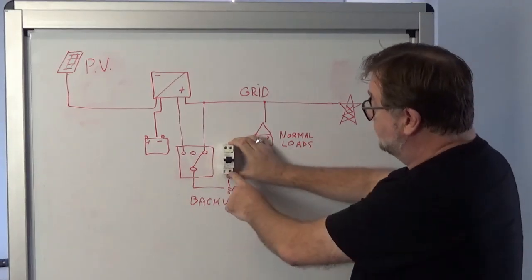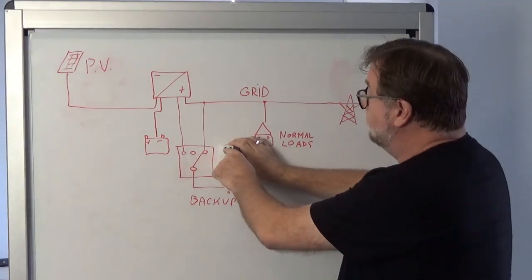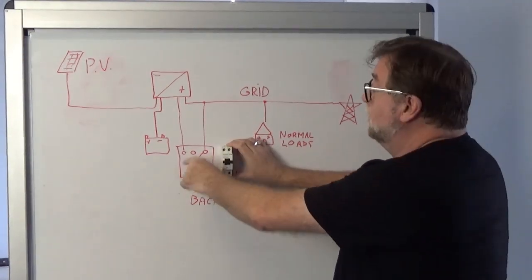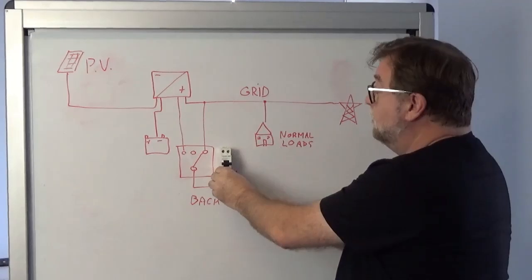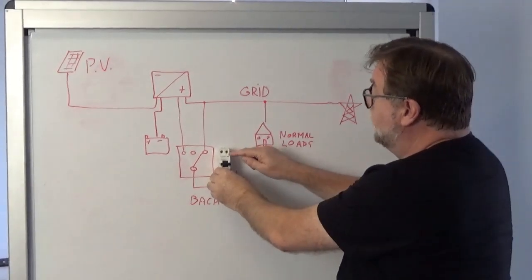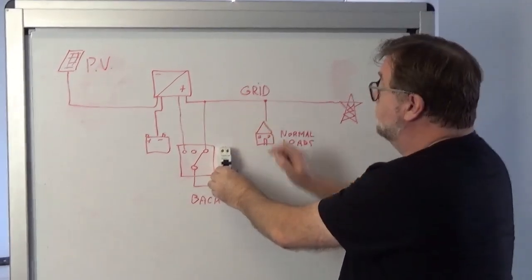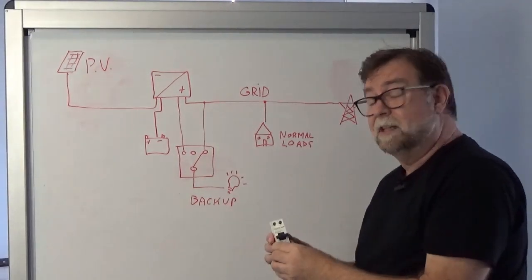The bottom connection here goes to your backup loads. Top left, which is number one, goes to your backup supply out the inverter and top right, which is number two, goes to your AC grid supply. And it's as simple as that.